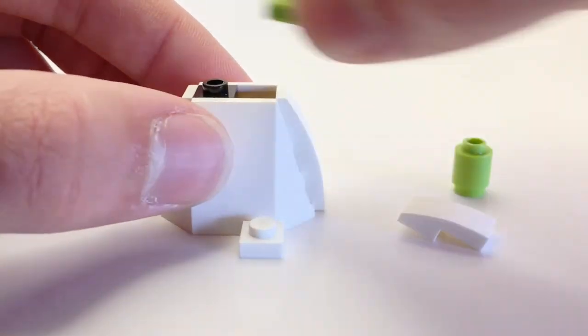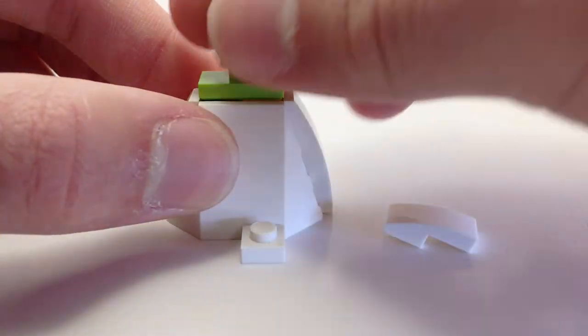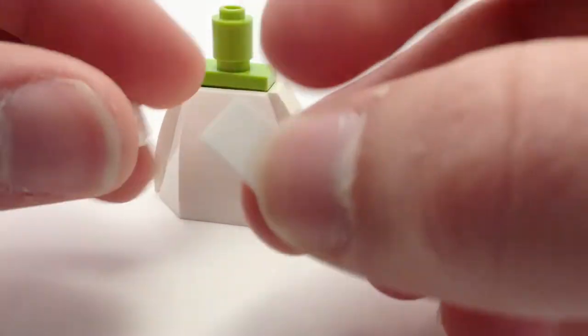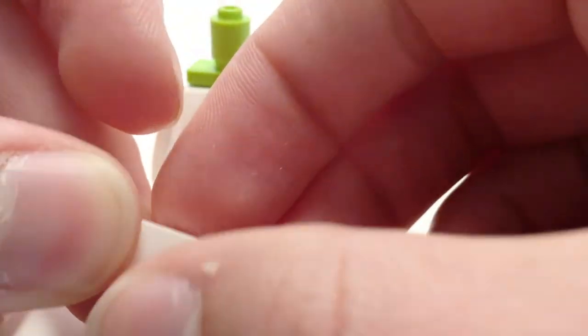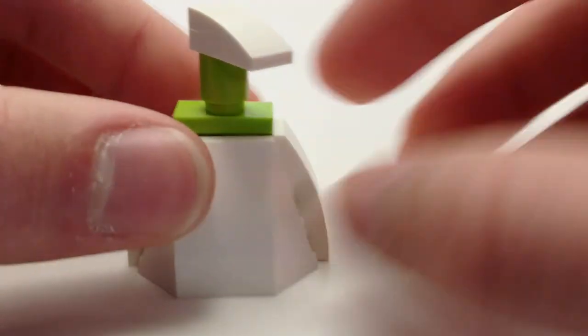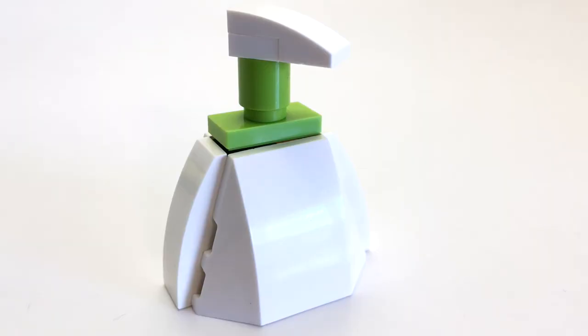Then the top section has a bit of light lime green in it, actually, with this jumper plate and a one by one round brick cylinder. Then we have a one by one as well as this one by two curved piece up here to form the top there and complete our soap pump.